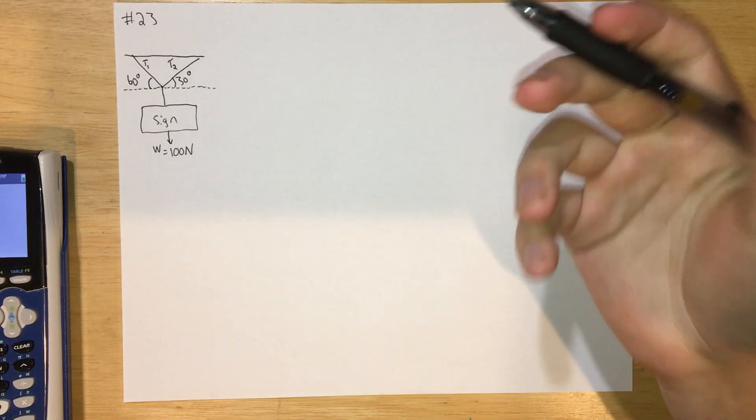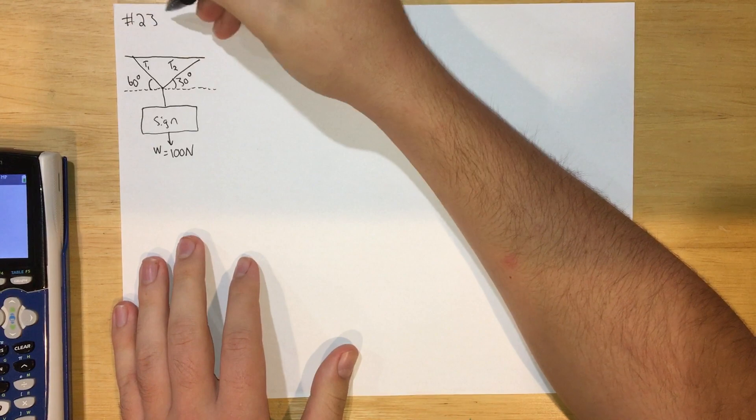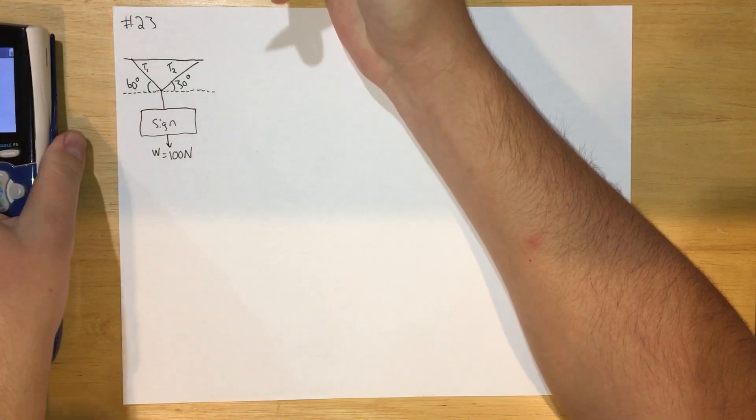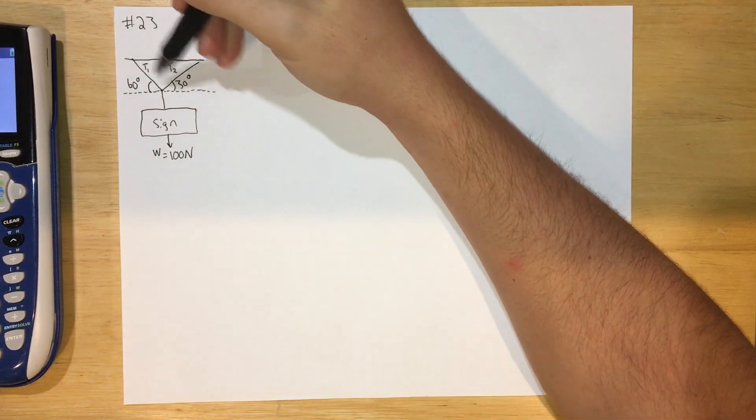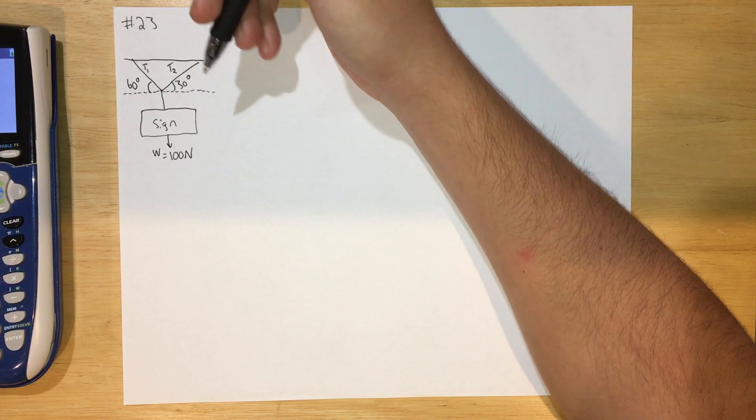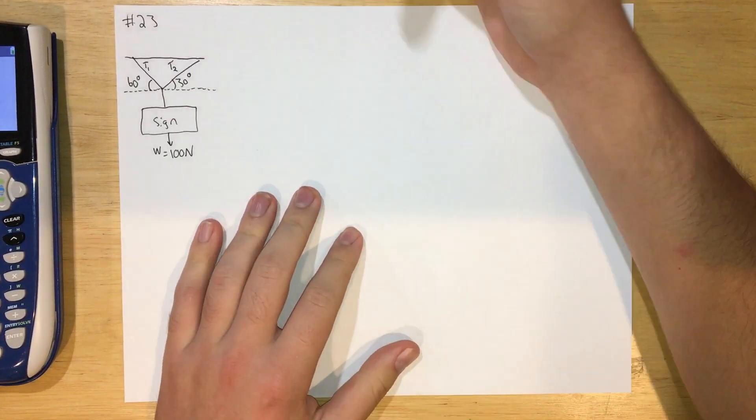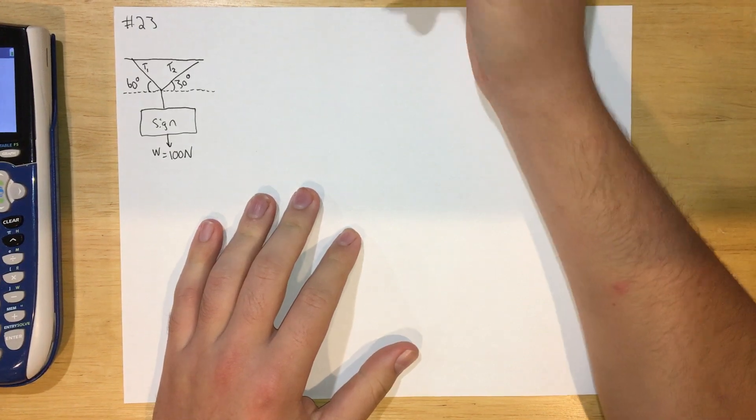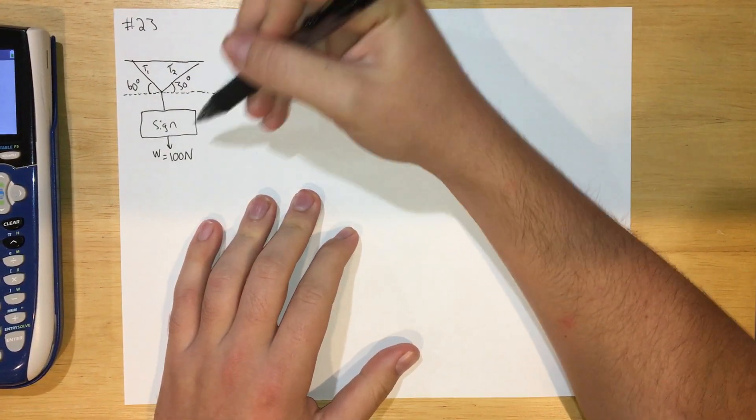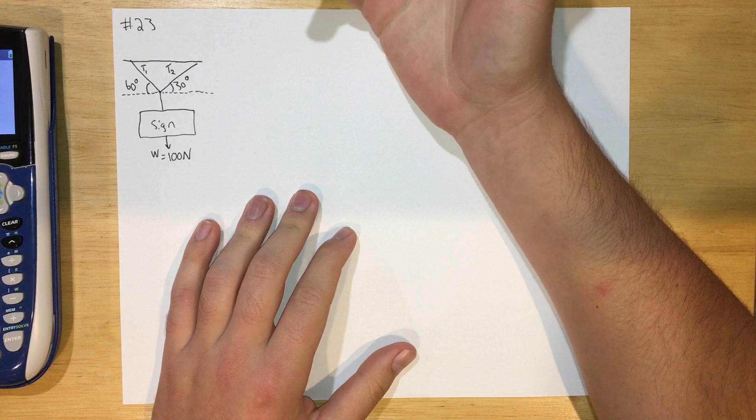Okay, so here we're going to have a little extra help video for number 23 on the practice. There's a sign being held up by two ropes and it's in equilibrium, so the sign is not moving. Because it's in equilibrium, we know the sign and the system is not accelerating. The forces are going to cancel out.